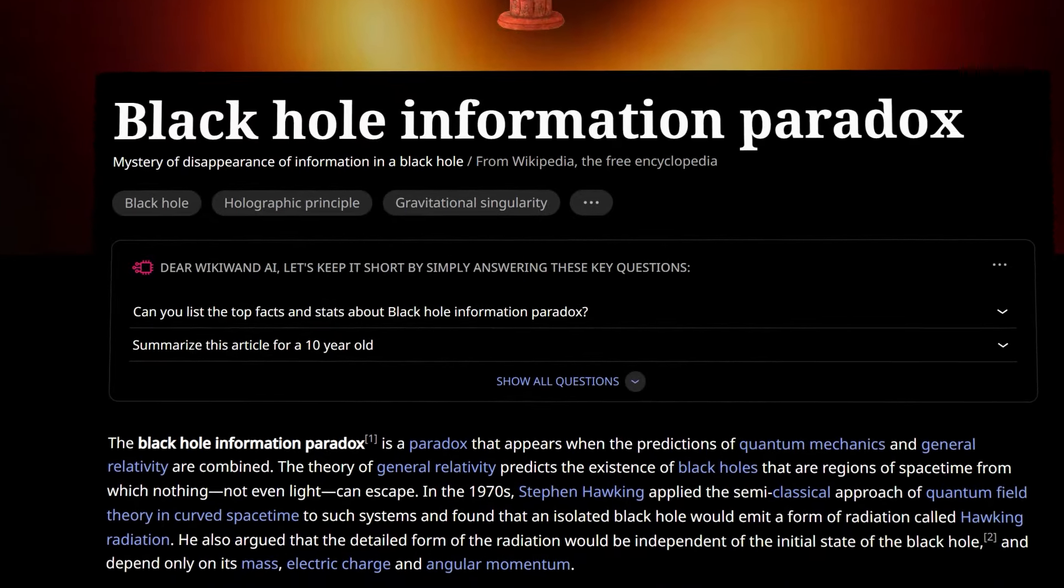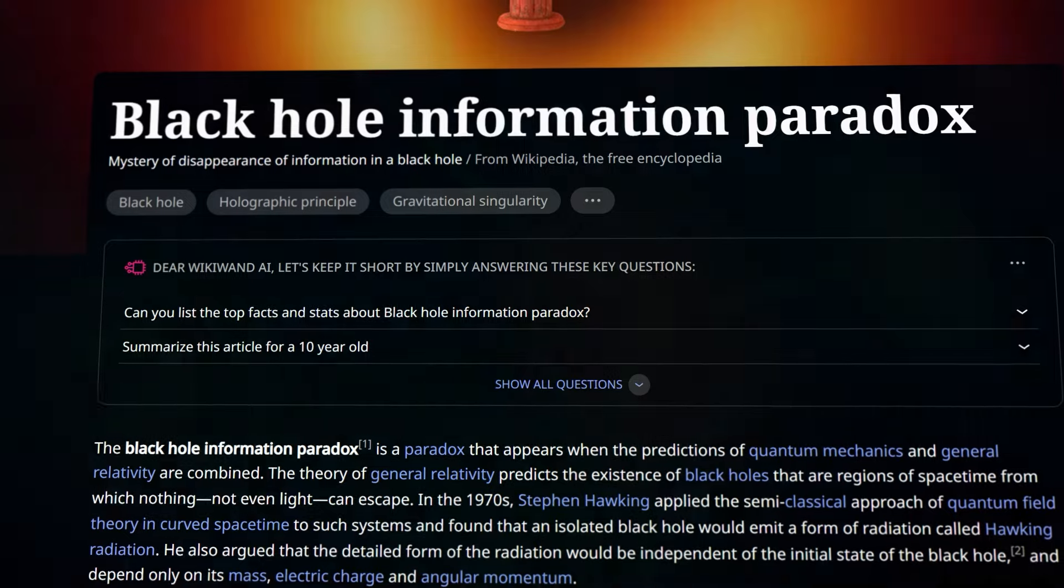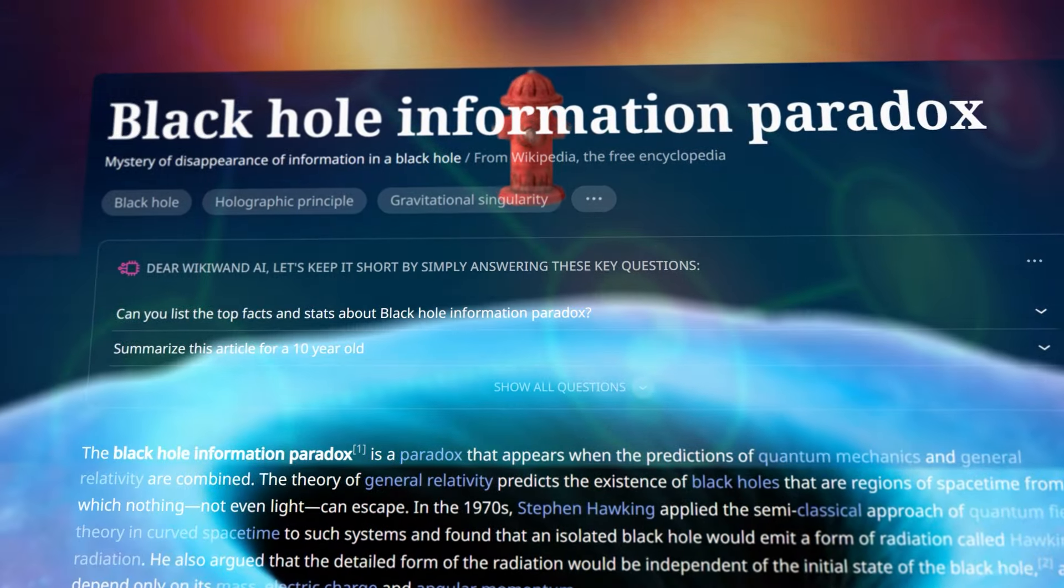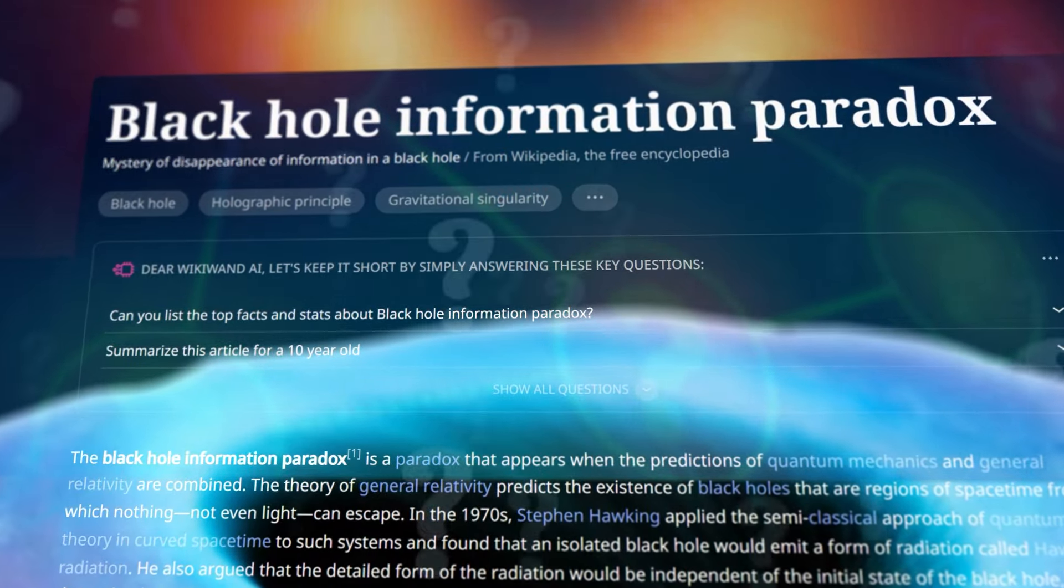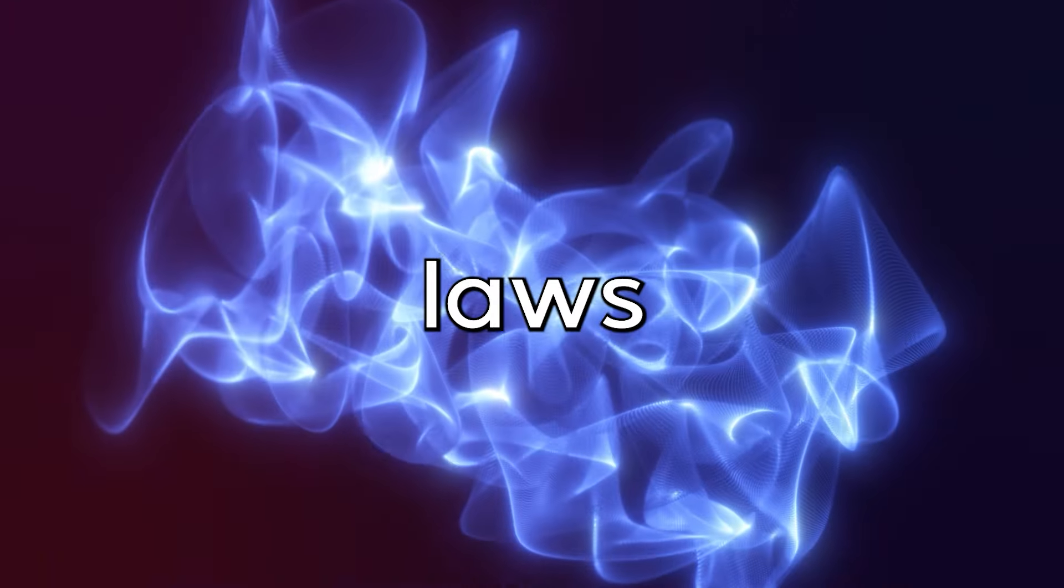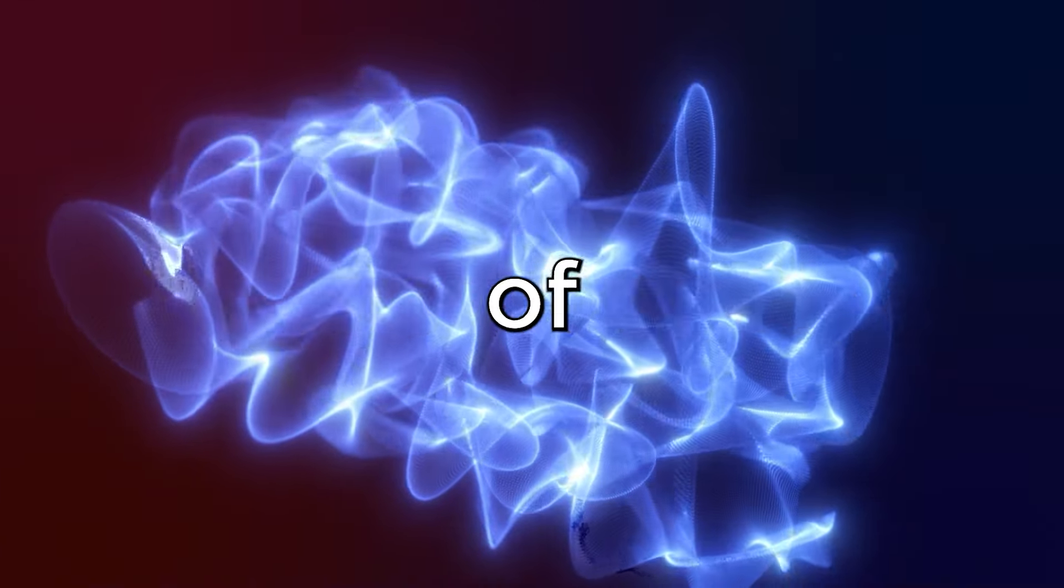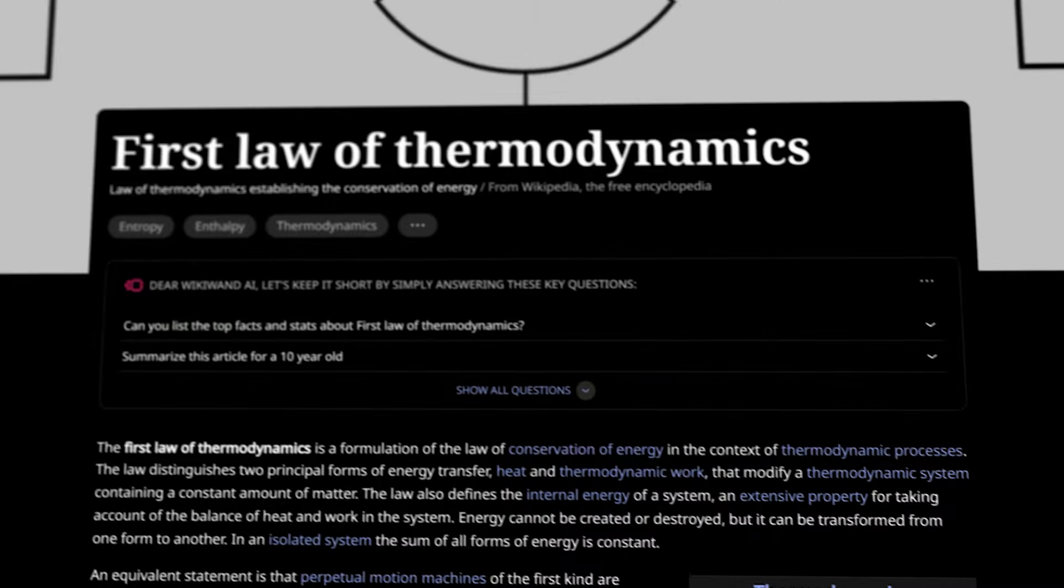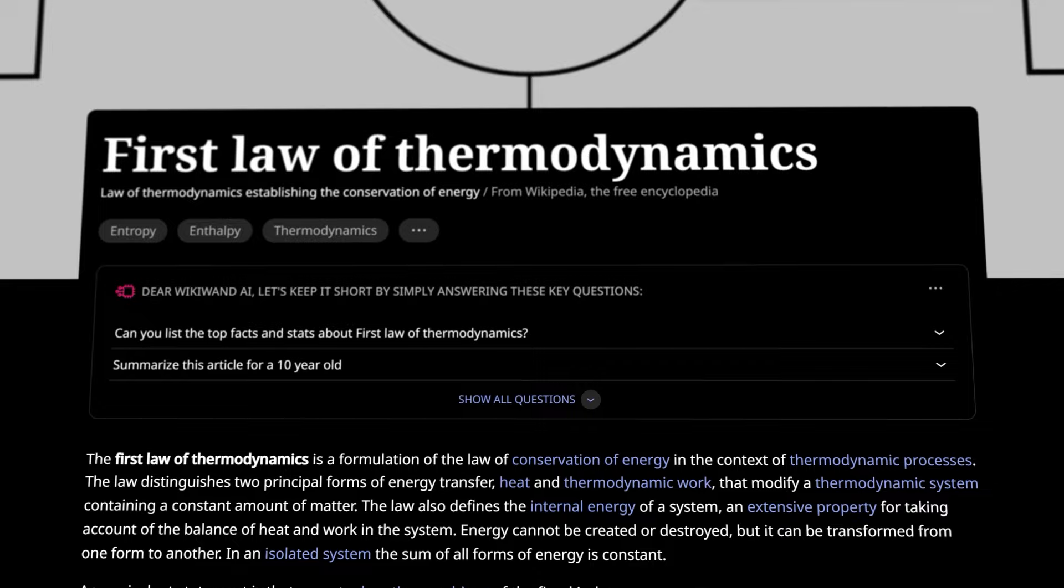As we start to unravel the nature of black holes, we are confronted with two concepts that challenge our very understanding of the cosmos. The first of these concepts is known as the information paradox, and it can best be described with the following question. When an object is fully swallowed by a black hole, where does it go?